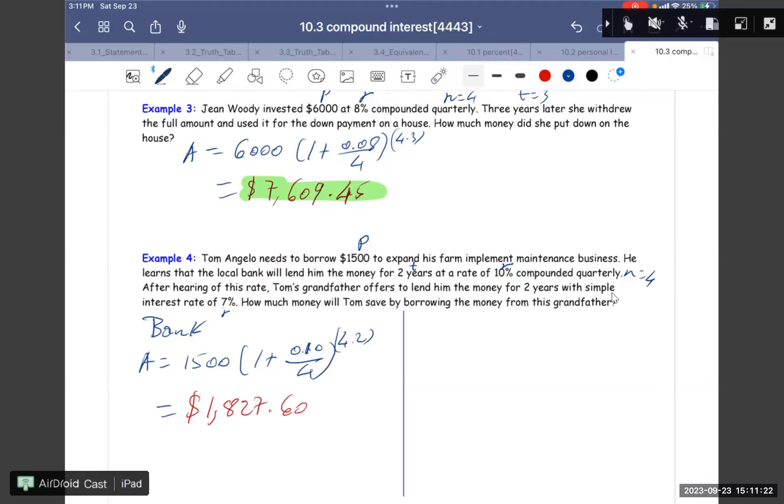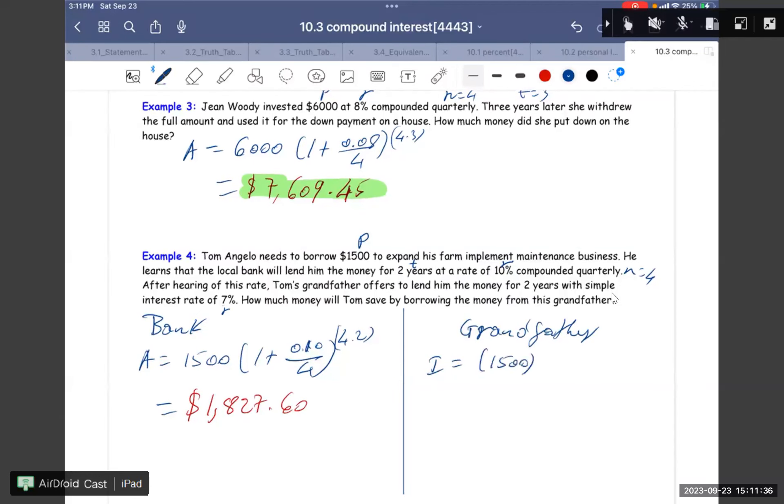So A equals 1500 times (1 plus 10% quarterly) for two years. So I know you guys can do the math already. So this one is $1,827.60. And for his grandparents, so I equals PRT. 1500 times 0.07 times 2 years. So this one, we got like $210 for interest. So we got $1,500 plus $210, so he had to pay back only $1,710. So you compare with this right, even the same.